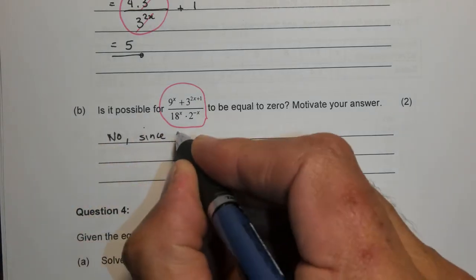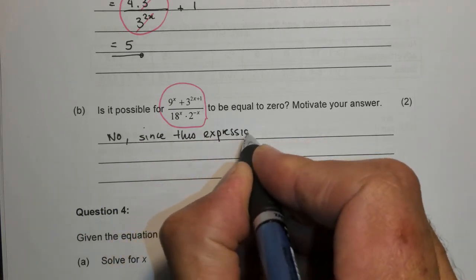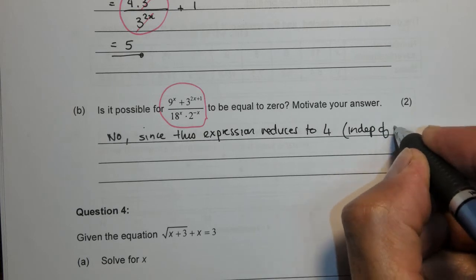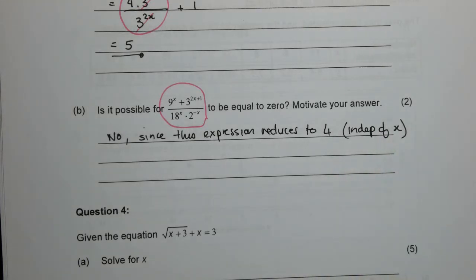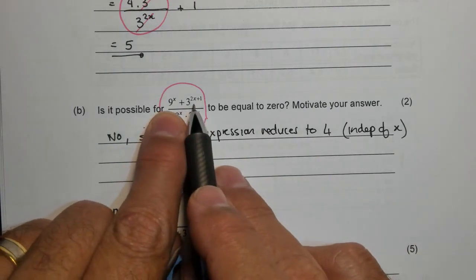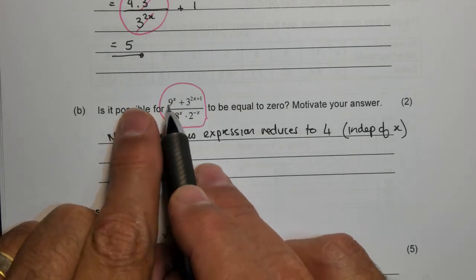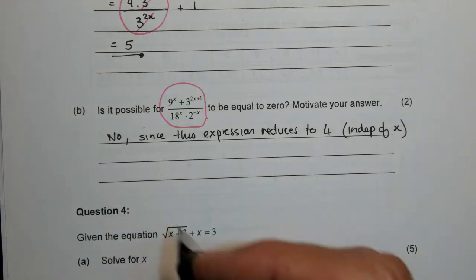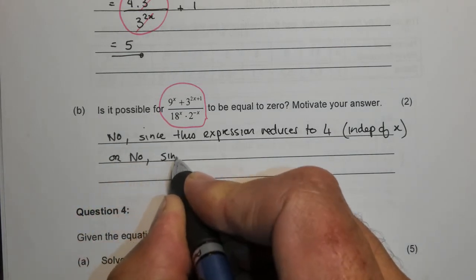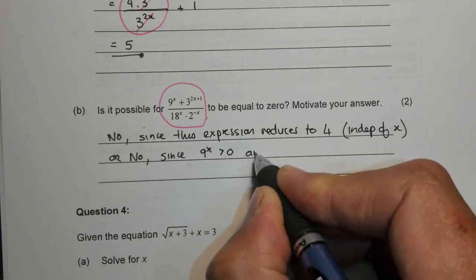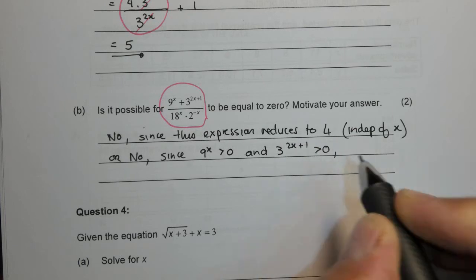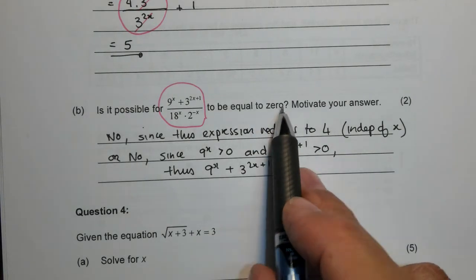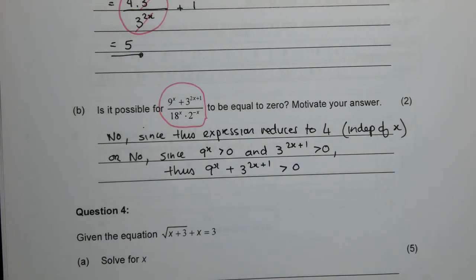If this thing no matter what x is reduces to 4, so is it possible to be 0? No. Since this expression reduces to 4 which is independent of x. Only thing that can make it 0 is if I choose things here that if I add them together gives me 0. This is a positive number, that is a positive number, this will always be positive, can't be 0. So you could have either argued that it reduces to 4 or you could have said no since 9 to the x is bigger than 0 and 3 to the 2x plus 1 is bigger than 0, thus the sum of these two things will always be bigger than 0.